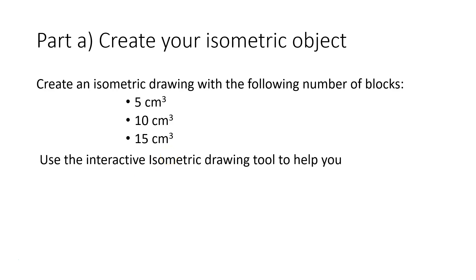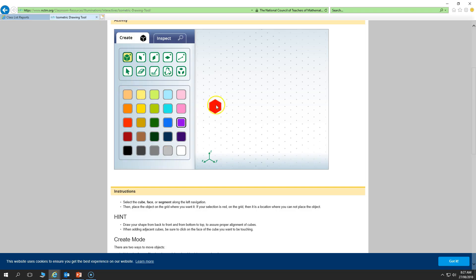We are going to use interactive isometric drawing paper to help you. So we'll do the first one that's 5cm cubed, so 1, 2, 3, 4, 5.